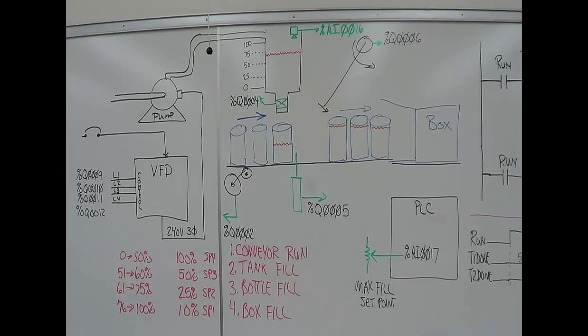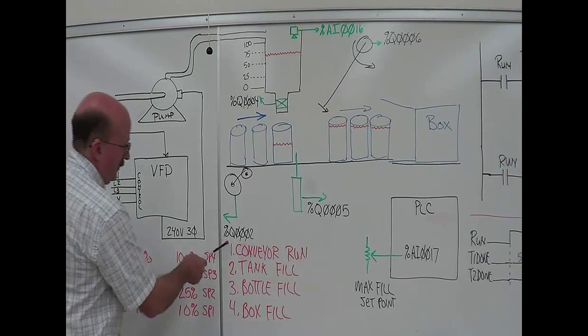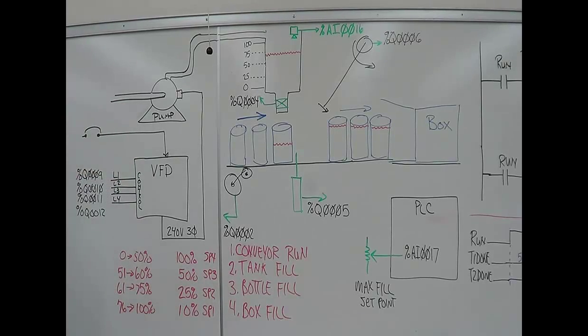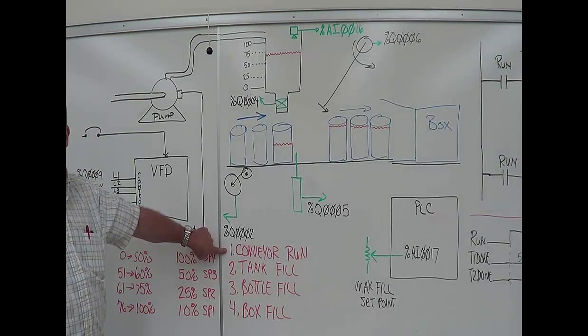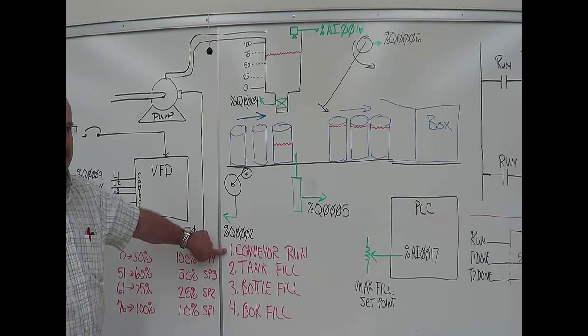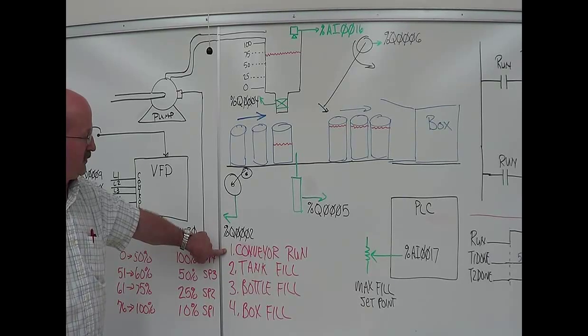Now you've got four separate processes here for this program. You've got four separate things you have to keep track of. You've got your run taking care of the conveyor, pay attention to the overload, start stop running the system.